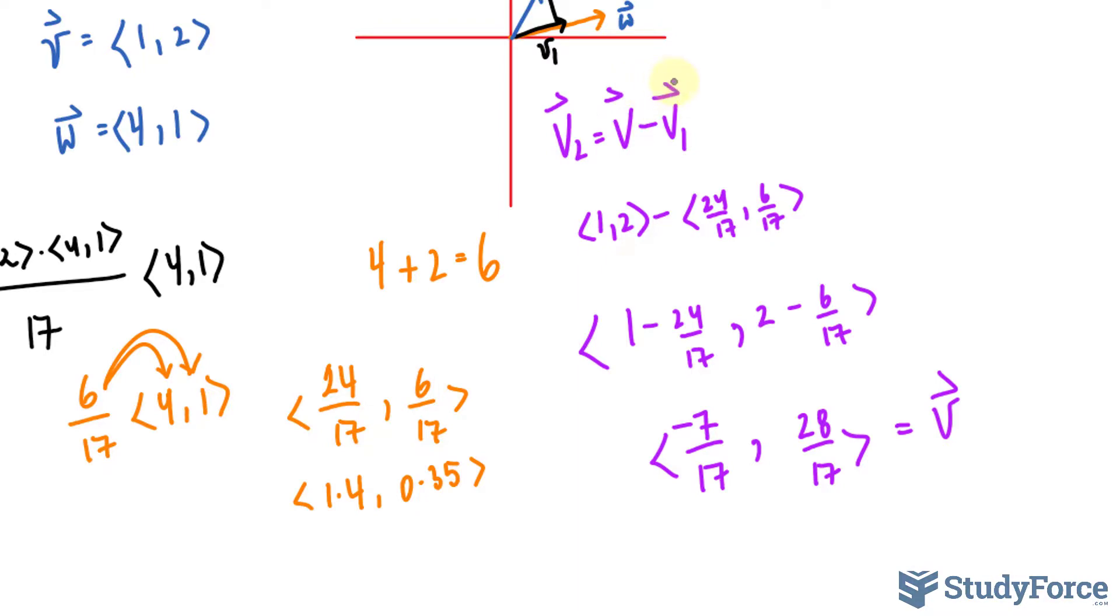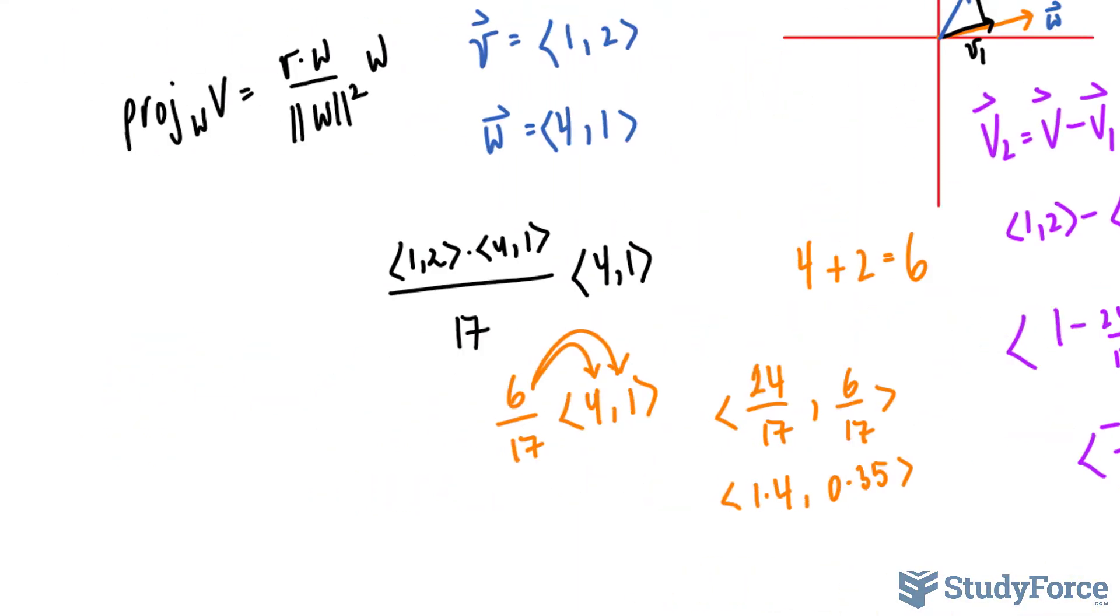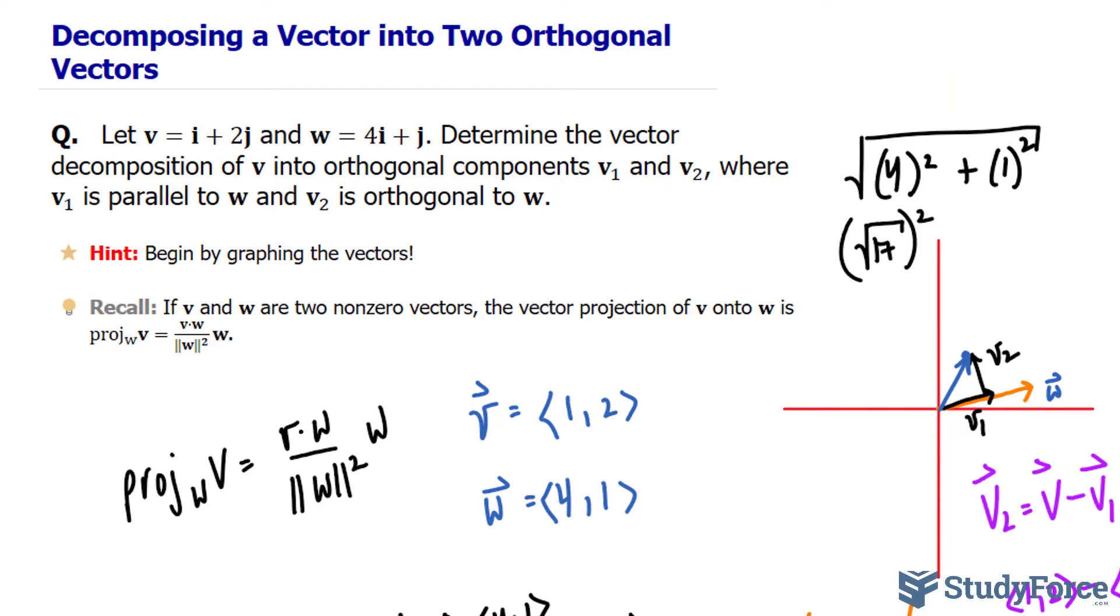And I forgot to put these arrows up here, which I should have. And so there you have it. That is how to decompose a vector into two orthogonal vectors.